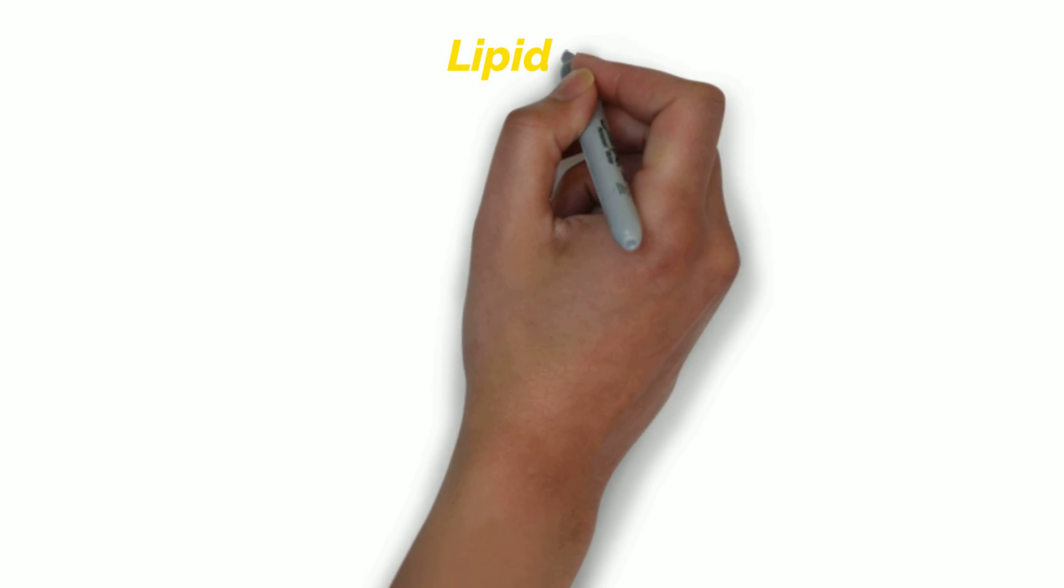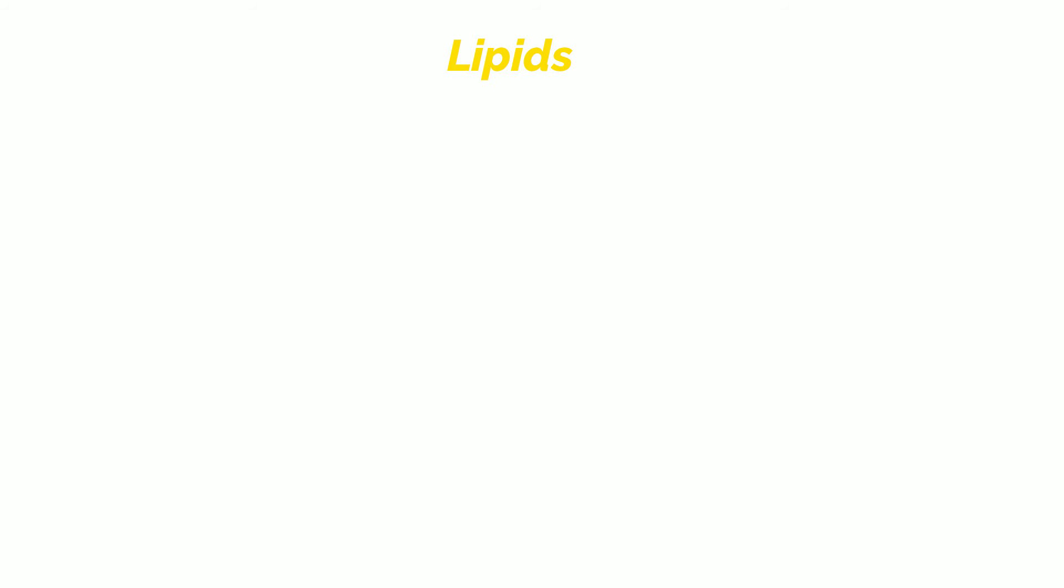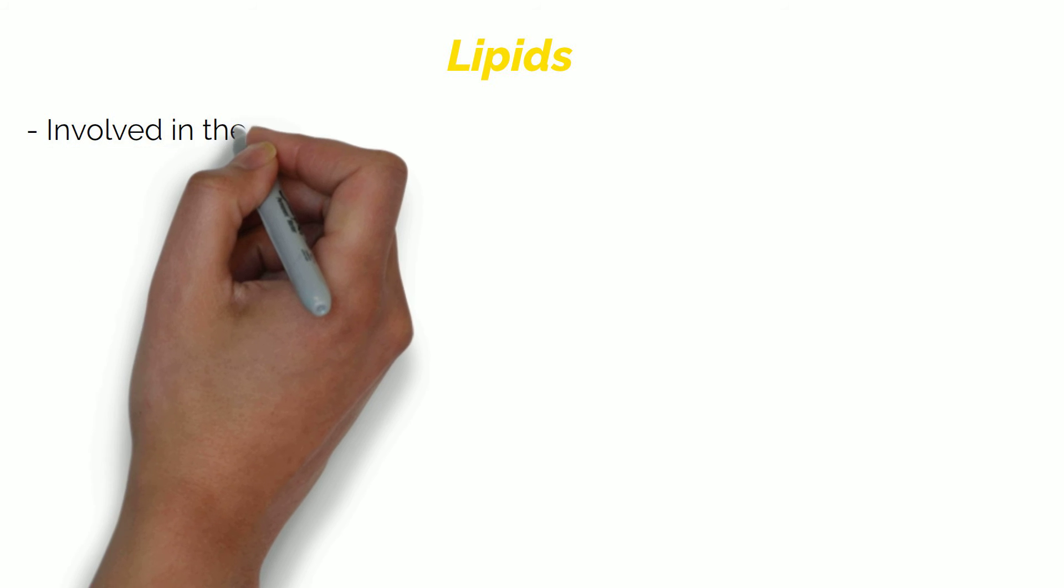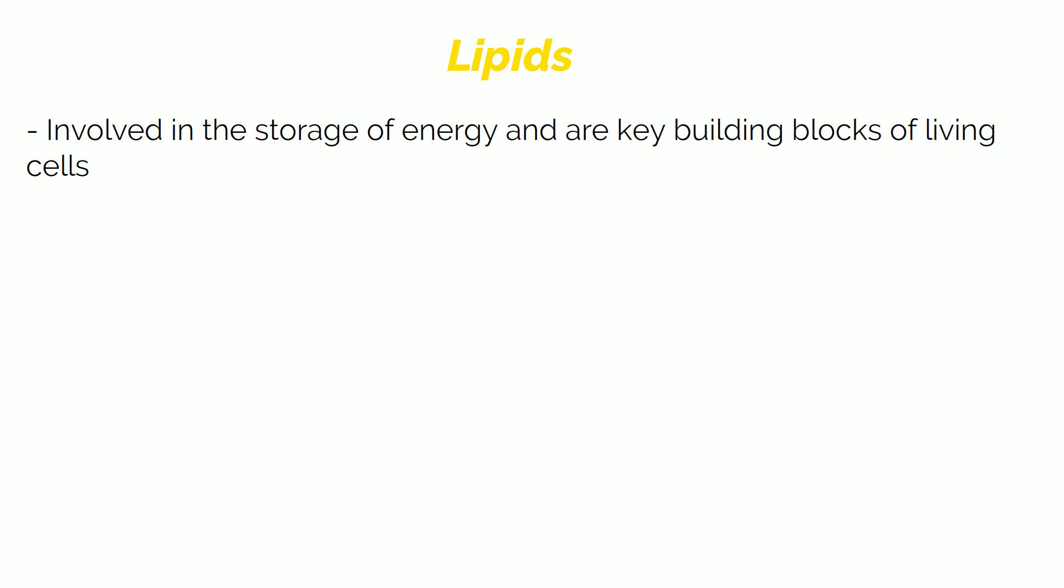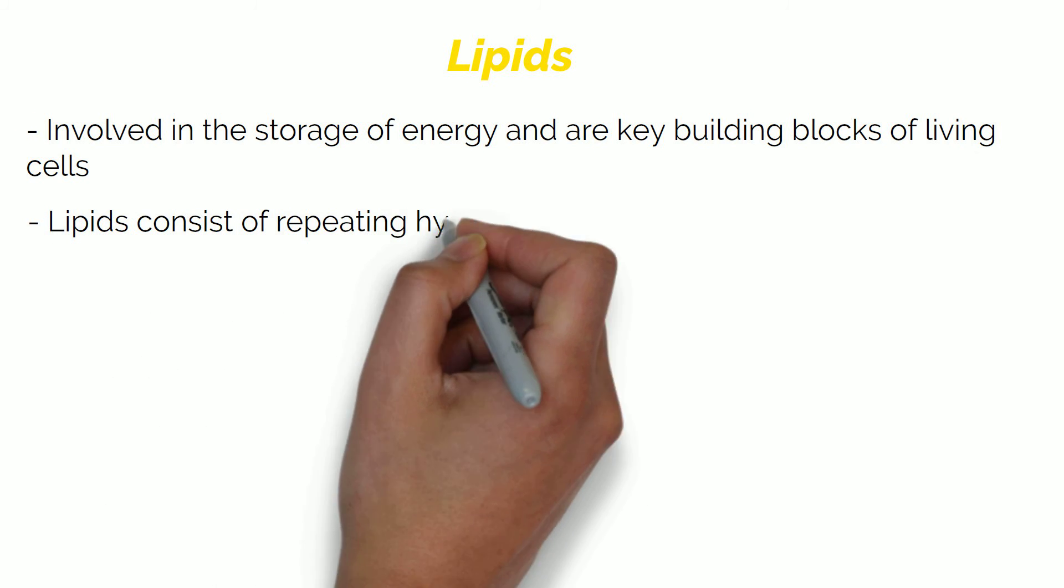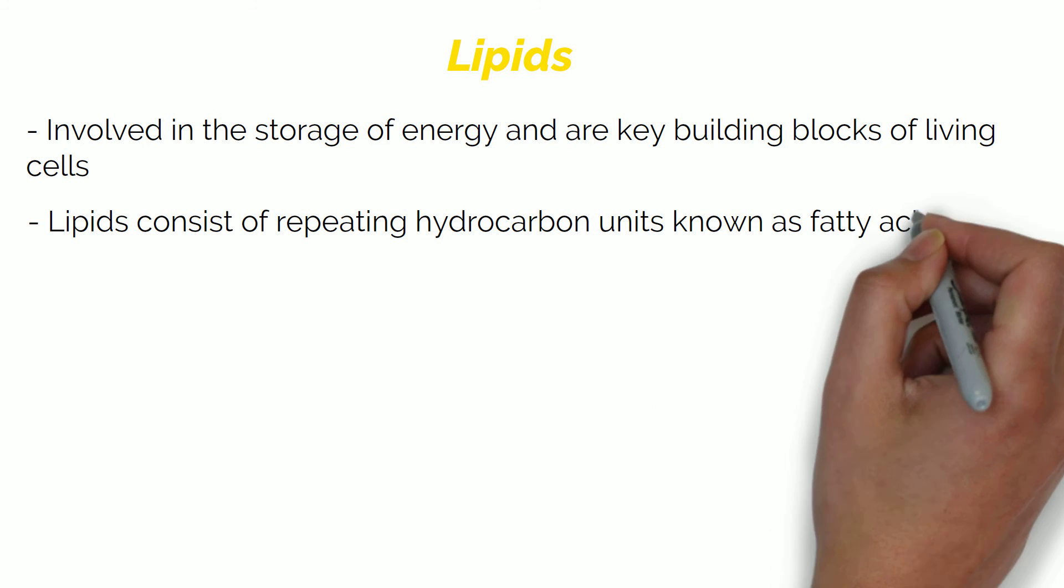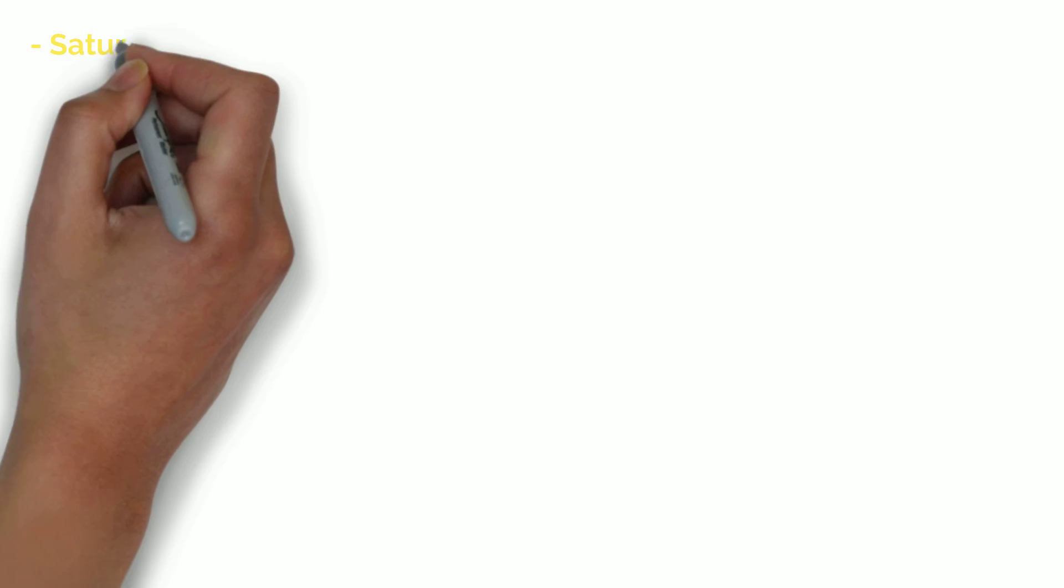Finally, we are going to discuss lipids. Lipids are essential to survival and function in living organisms. Lipids are involved in the storage of energy and are the key building blocks of living cells. Without lipids in our cells we will have no membranes which would be a disaster. Lipids consist of repeating hydrocarbon units known as fatty acids. There are two types of fatty acids, saturated and unsaturated.